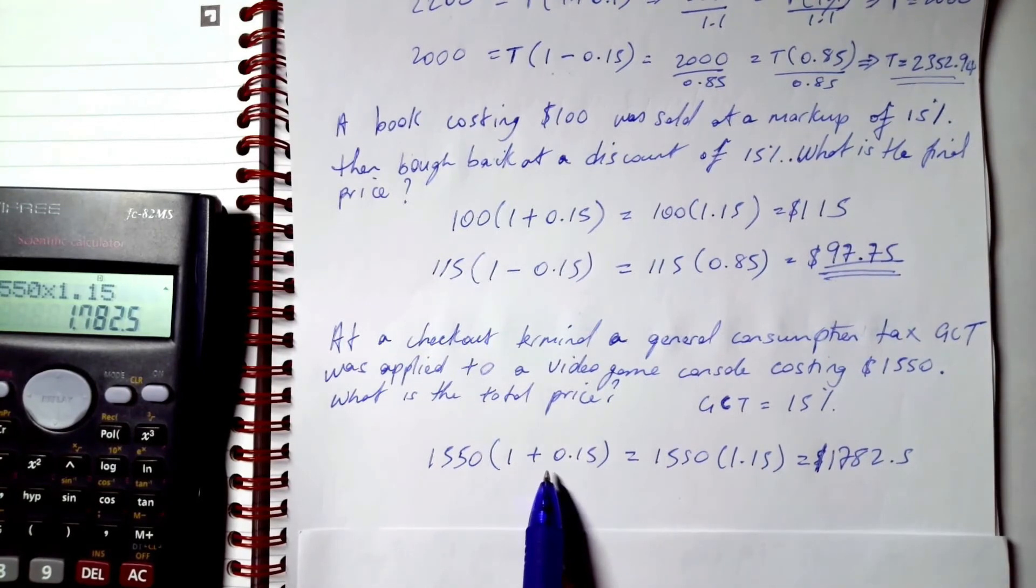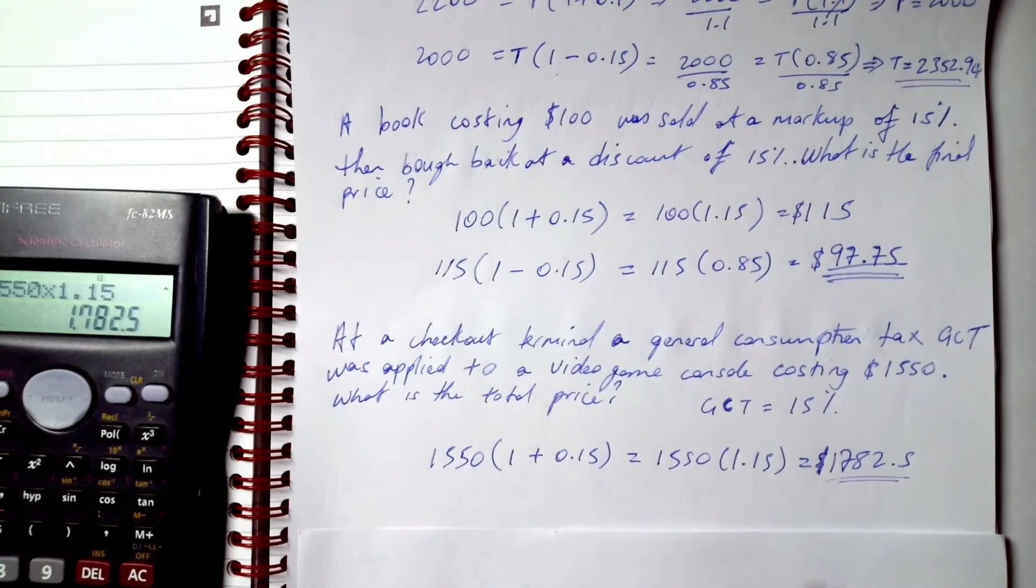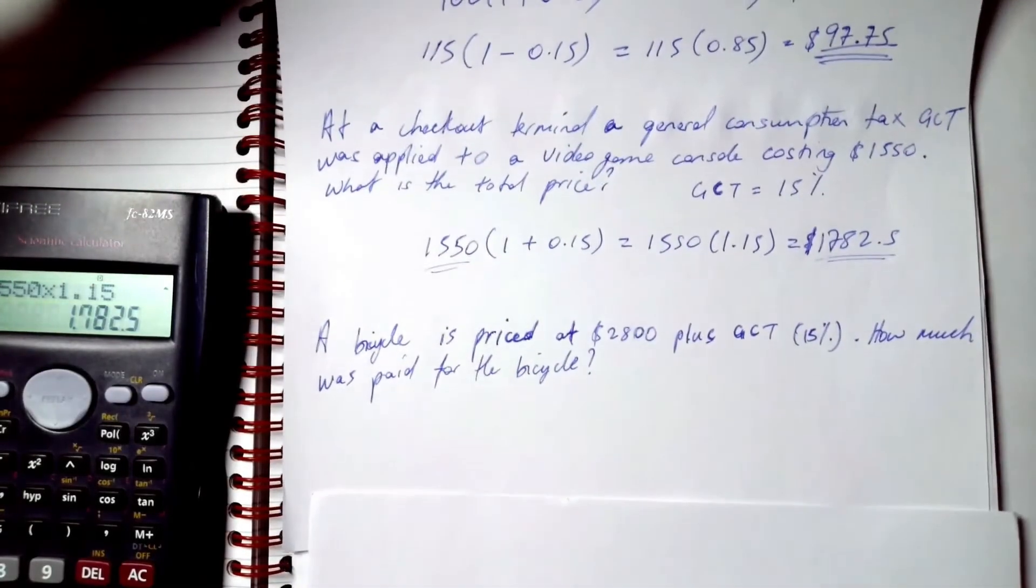This is the price after the tax was applied. This is a simple question - we apply the GCT tax to the cost of the game, and the total is now this. This is what you'll pay at a checkout even though the price tag says this.